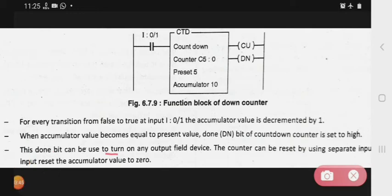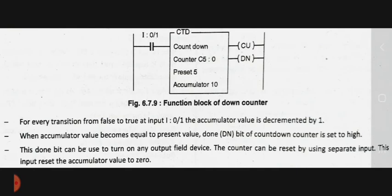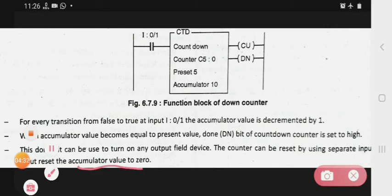This done bit can be used to turn on any output field device. The counter can also be reset by using a separate reset input, which resets the accumulator value back to 0.